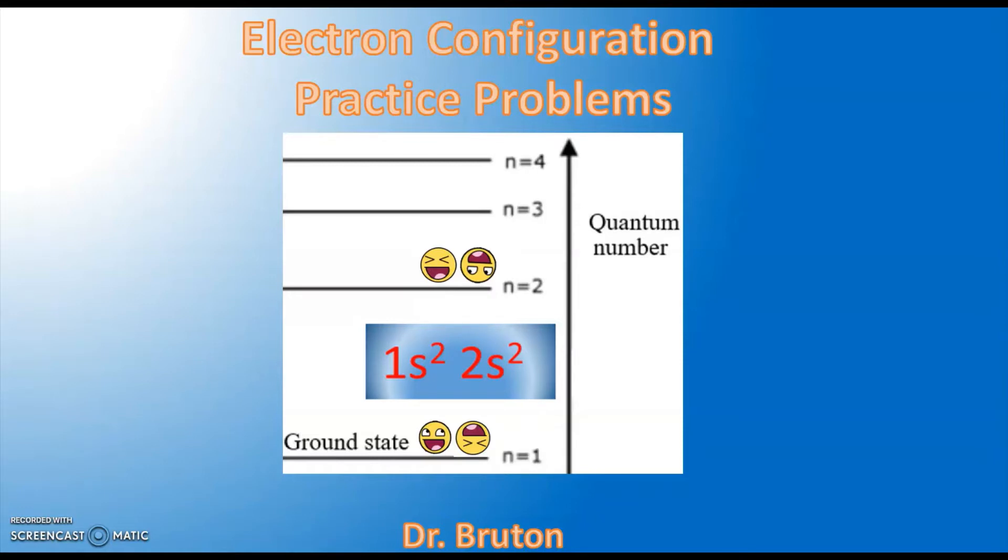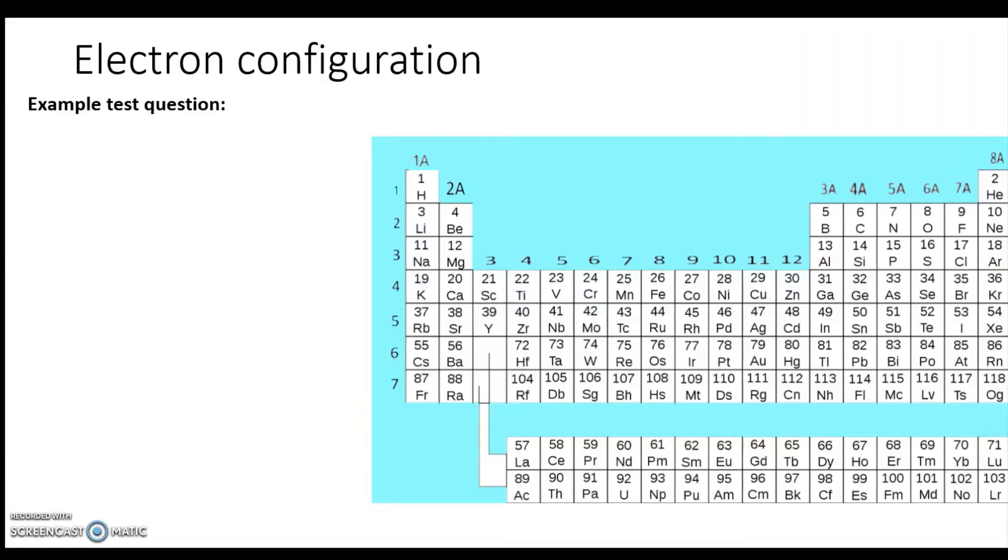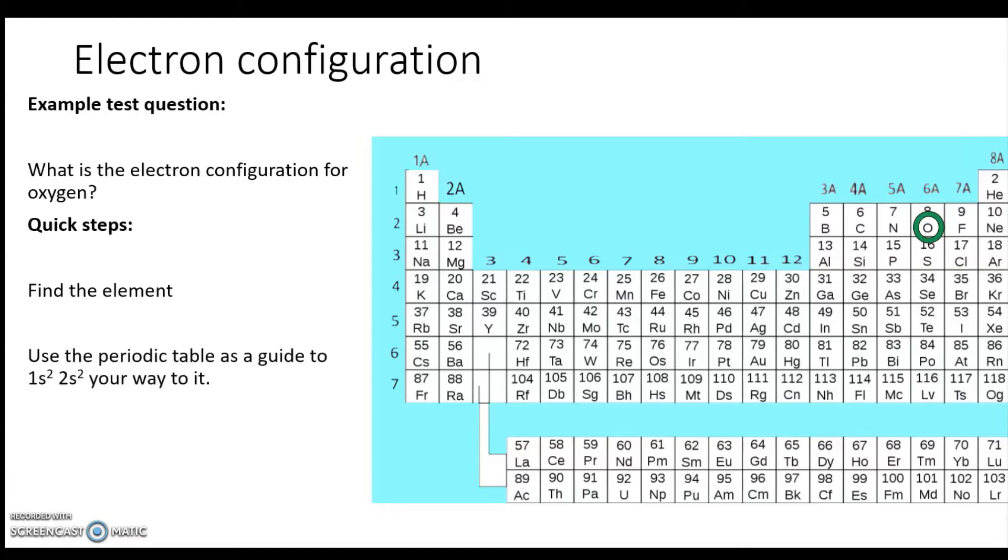The first one we're going to do: what is the electron configuration for oxygen? I've broken all these down into two parts. The first of which is to just find the element, which is simple enough. Oxygen is right there.